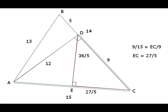And the last element we can calculate here is the length of segment AE. We subtract 27 over 5 from 15 and obtain its length 48 over 5.